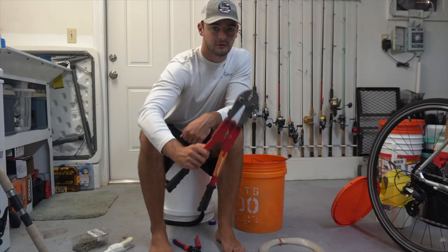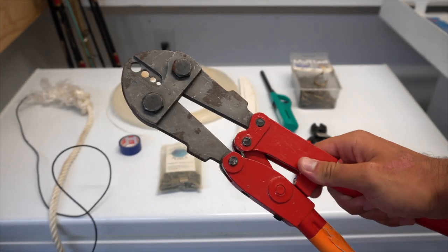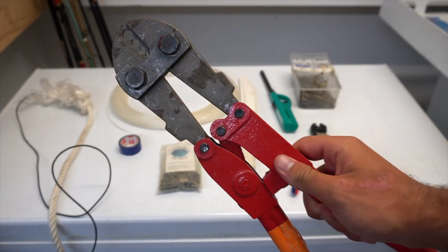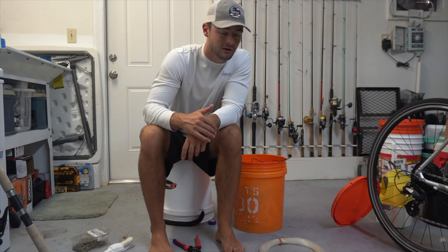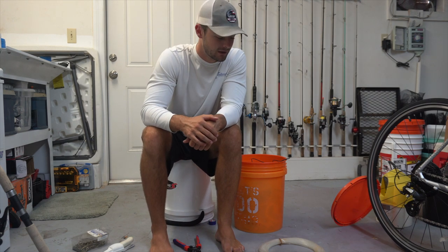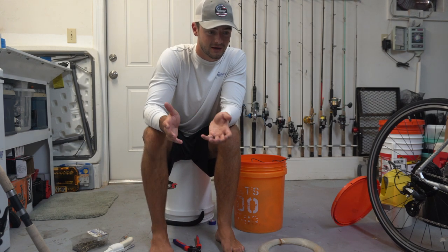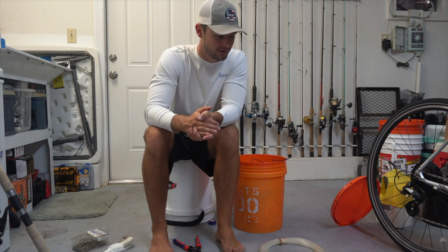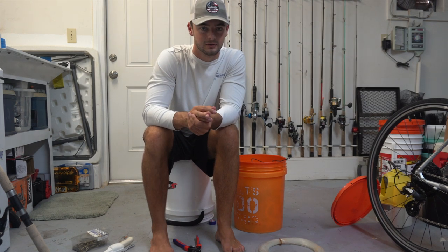You're also going to need a pair of crimpers. Obviously this is a massive pair but it's going to get the job done for me. You could probably get away with just tying like a uni knot with the mono. It's just really hard to tie 500 pound mono and also you just get a stronger connection using the crimps.